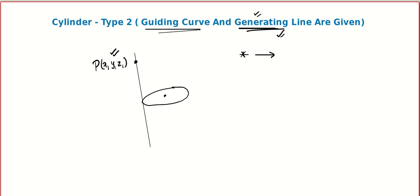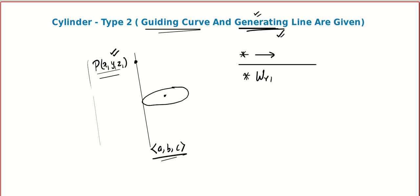The axis or a line parallel to the generating line will be given — basically we need the direction ratios or direction cosines, whatever is given. If the direction ratios are a, b, c, you will be able to find them when you look at the question. Now using these two things, we write the equation of the generating line. The second step is to write the equation of the generating line in parametric form — that's very important.